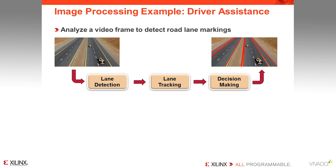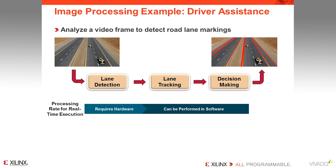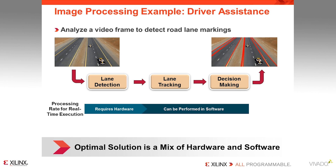However, there is a significant difference in the computational requirements of these processing blocks. While lane detection processing needs to consider every pixel in each frame of video, lane tracking and decision making only need to process the extracted features — in this case the location of the lane. The lane detection algorithm must be run in dedicated hardware, as it would require an expensive and power-hungry CPU to keep up with the processing requirements. However, the lane analysis and decision making can easily be performed on a CPU, as these are not data-intensive tasks. An efficient implementation of this application, and in fact for many other computer vision tasks, always requires a customized mixture of hardware and software.